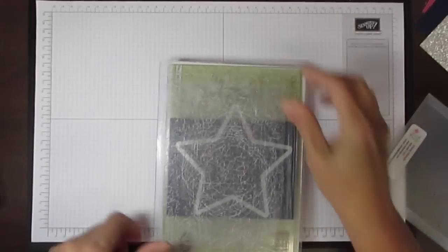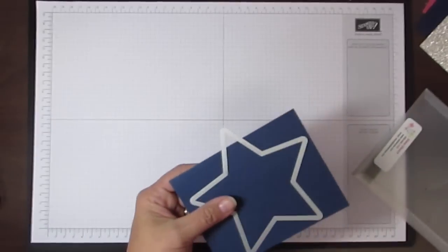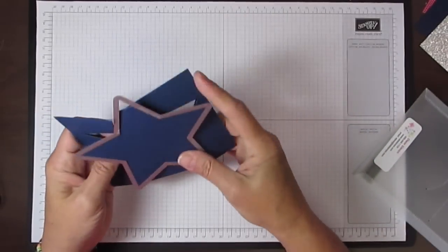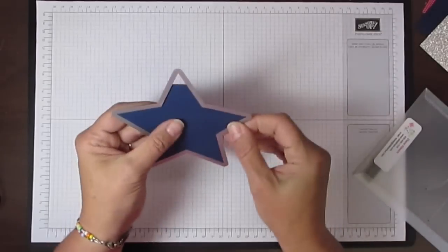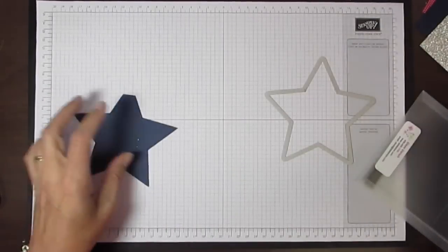Once you have that run through the big shot, here's your cardstock. When I pull this off, I have the base of my card with that large star.